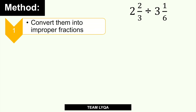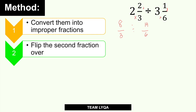The first thing we're going to do, step by step, is to convert them into improper fractions. So: 2 times 3 plus 2 — that's 6 plus 2, which is 8 over 3. Divided by: 3 times 6 is 18 plus 1, so that's 19 over 6. Next step, we're going to flip the second fraction over, and then convert this into multiplication. So we have 8/3 times 6/19.